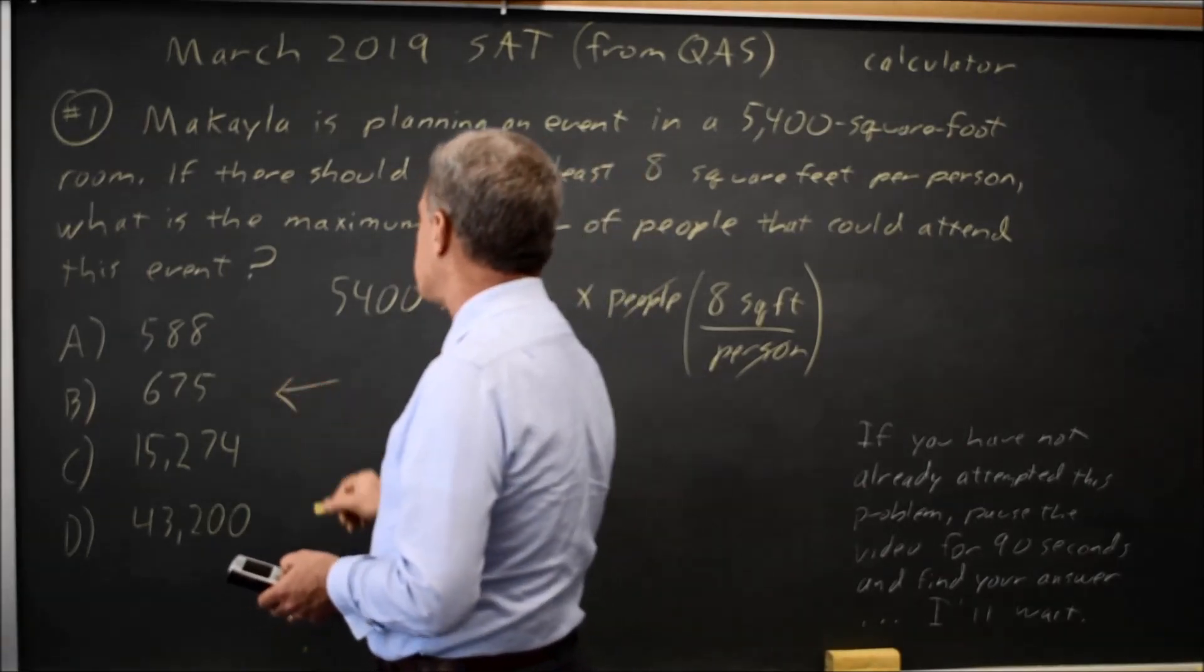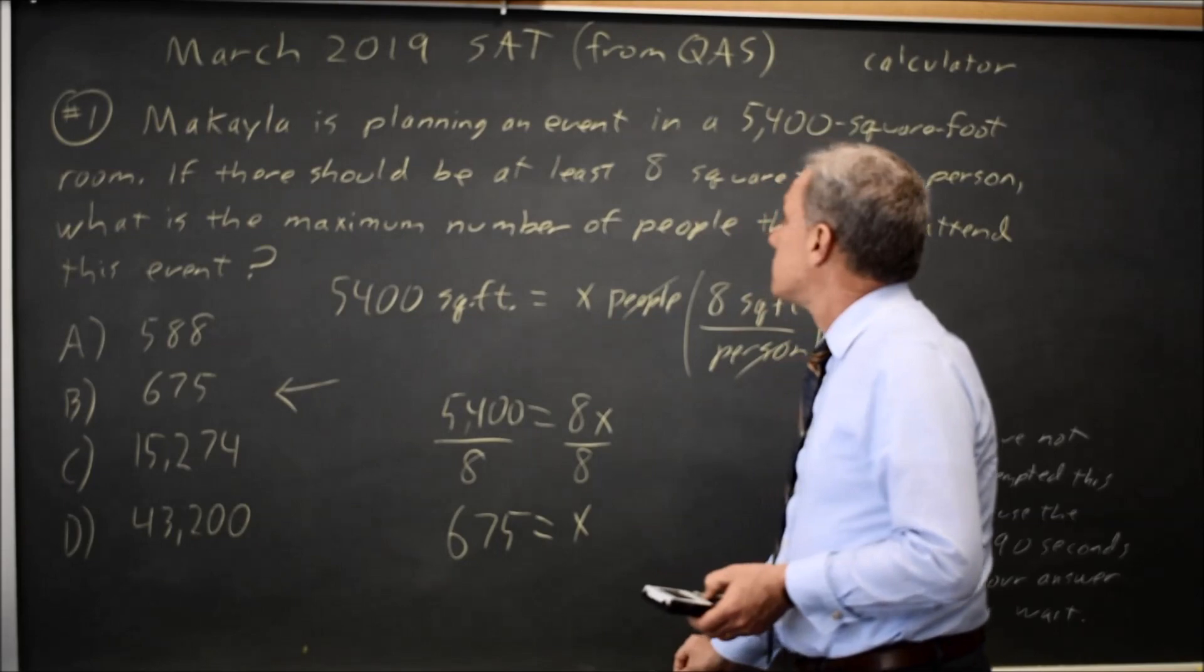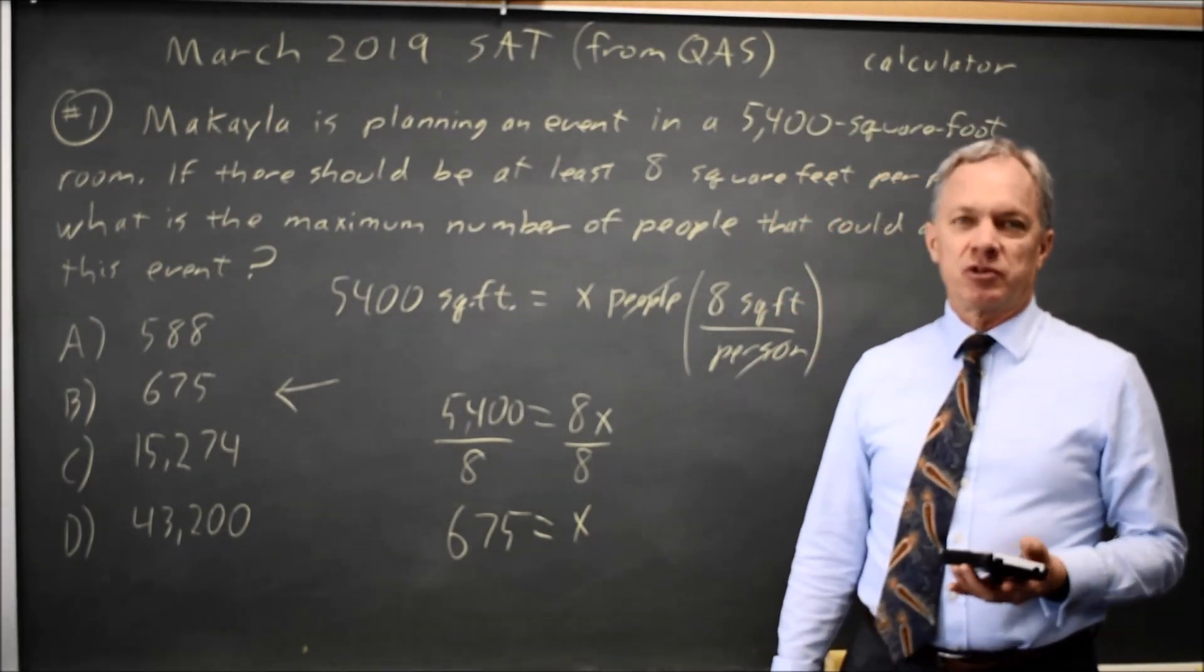So the answer would be choice B. 675 people is the maximum for a 5,400 square foot room.